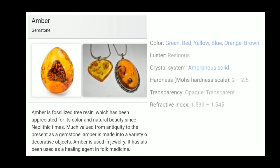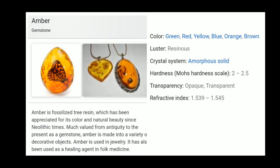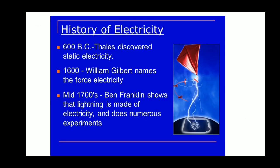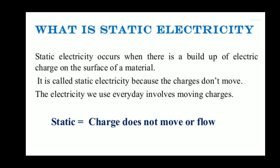Shall we study further? This is some more information about amber as additional information for you — just go through it. The history of electricity started from Thales, then William Gilbert, and then Benjamin Franklin with the famous kite experiment. So what is static electricity? Static means which is in rest, which doesn't move — velocity is zero. Now, how to get the charge?